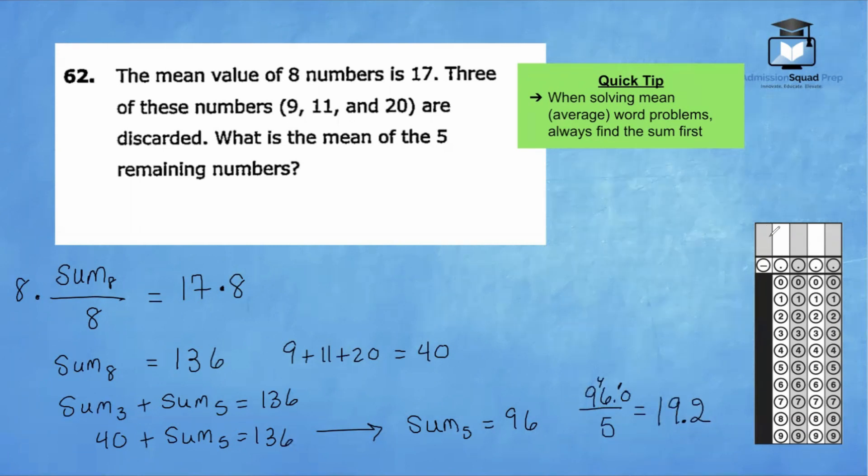Because this number is positive, we're going to skip over the gray box, and we're going to start in the white box. So we have 19.2, which means I'm going to fill in the number one. I'm going to fill in the number nine. This time we have a decimal. So you're going to go ahead and fill in the decimal point. And finally, we're filling in the number two. This completes the grid in questions for the 2024 SHSAT Form A practice exam.